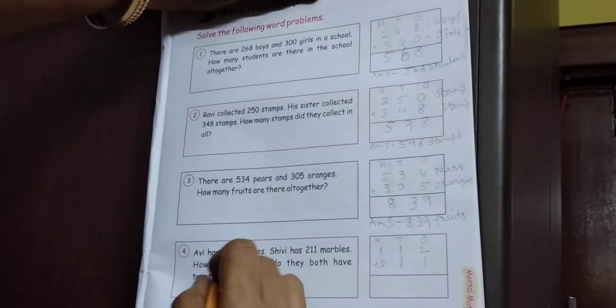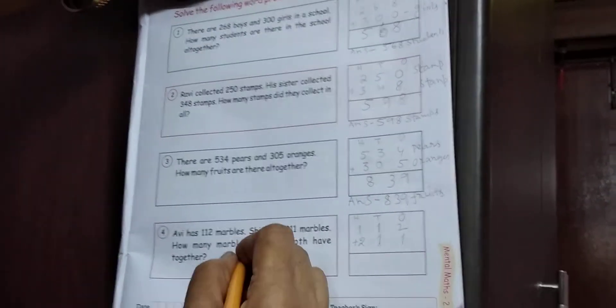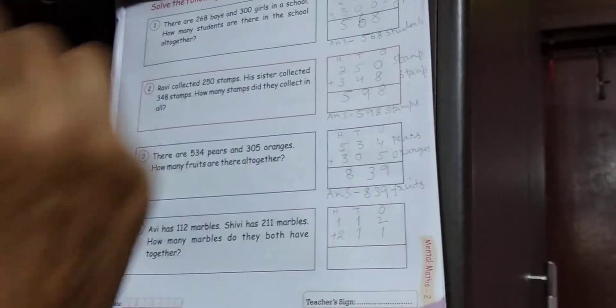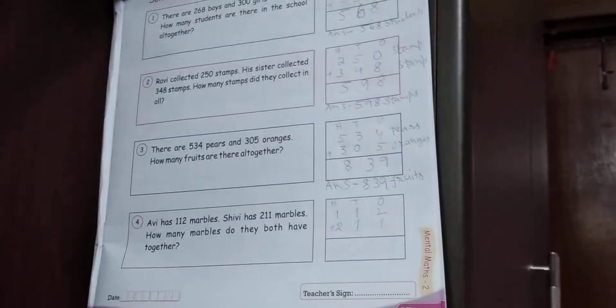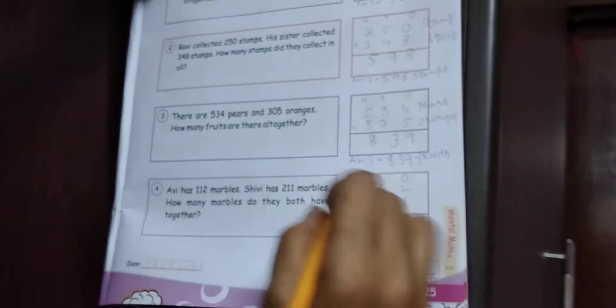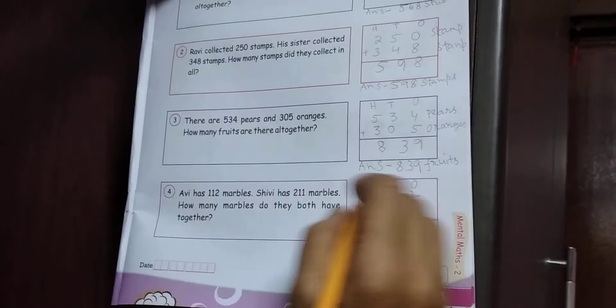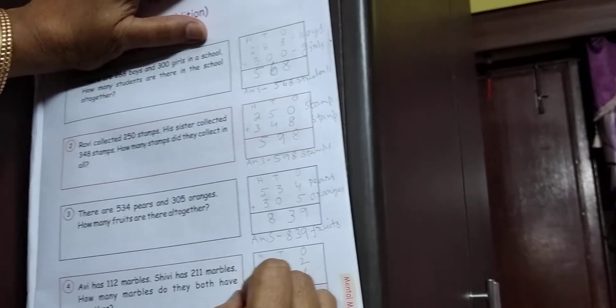Next, Obhi has 112 marbles, Shibi has 211 marbles. How many marbles do they both have together?